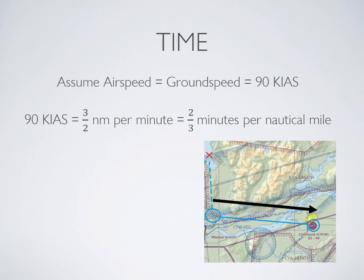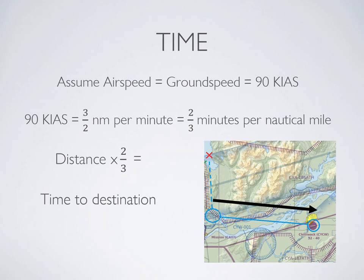Now that you know your distance to destination, you can take 90 knots as an assumed ground speed. That makes the calculation easy — it's literally the distance times 2 divided by 3. This can be a little complicated if you're not comfortable doing mental math, so I recommend doing these kinds of calculations on the ground before you even get in the plane, in order to make it easier for you.